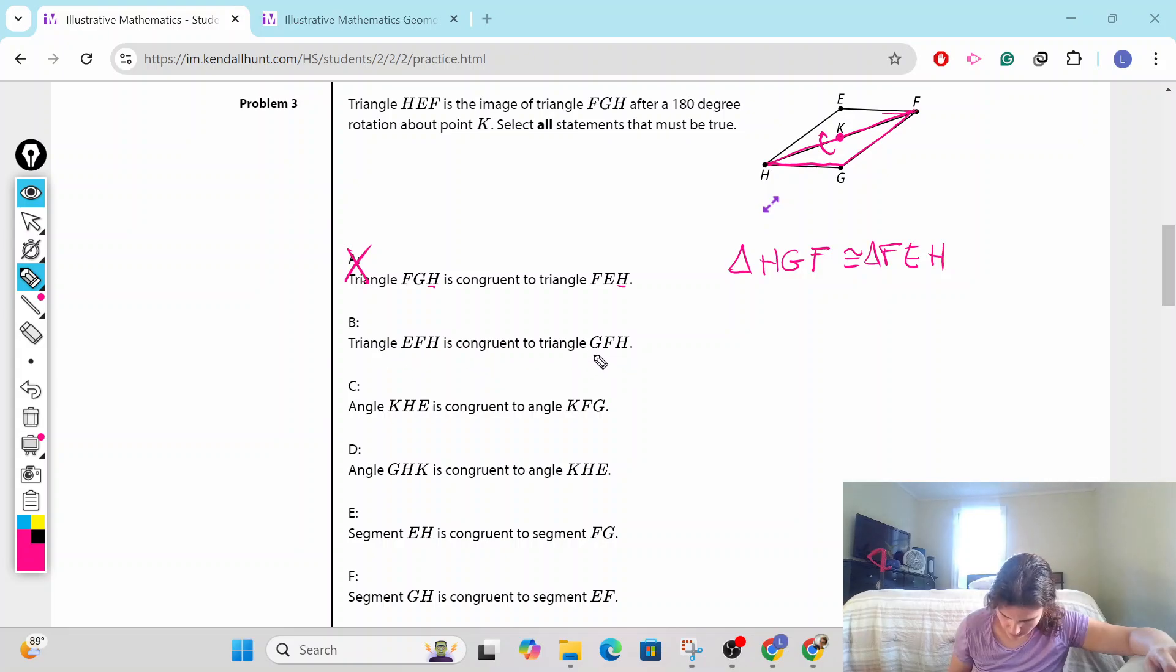Triangle EFH is congruent to triangle GFH. E and G match, F matches with F, but F should match with H, so nope. Angle KE is congruent to KFG. So KE, that's this right here. Is he congruent to KFG? KE, KFG. This corresponds to this, and that corresponds to that. This is a corresponding figure, so this one is correct. Because if you rotate him around, EG is going to match up here. This middle segment is going to match up here, and this diagonal is going to match up here. So that actually is true.